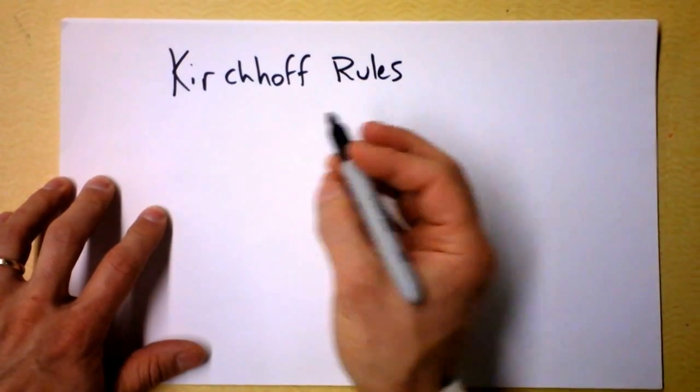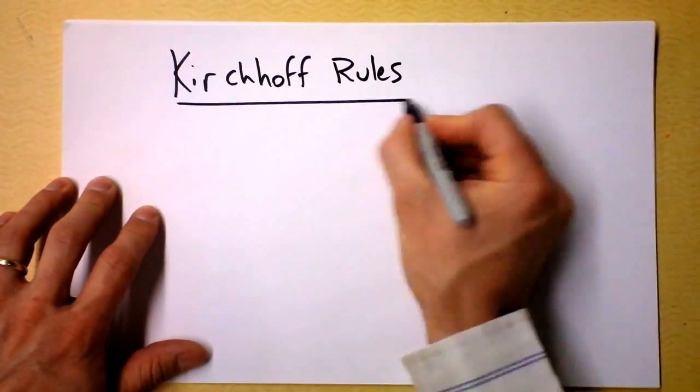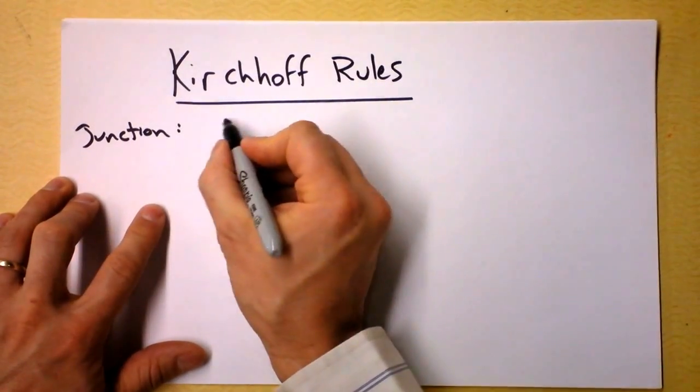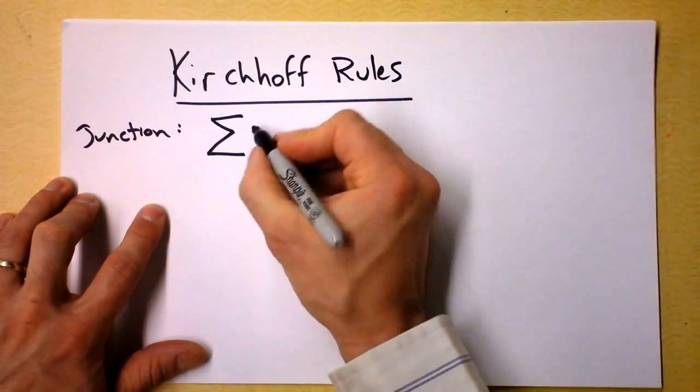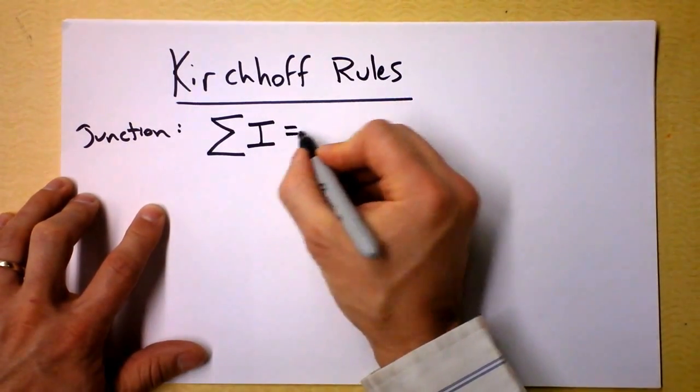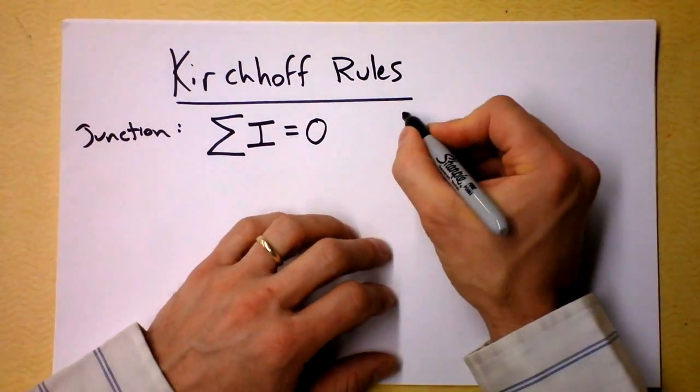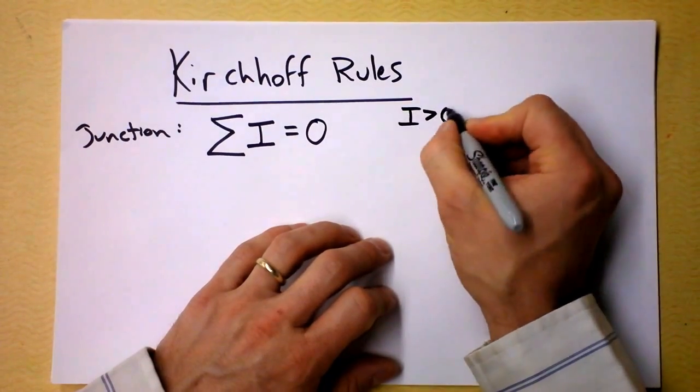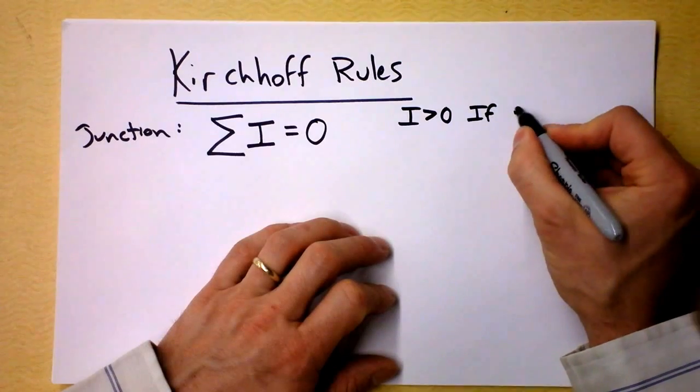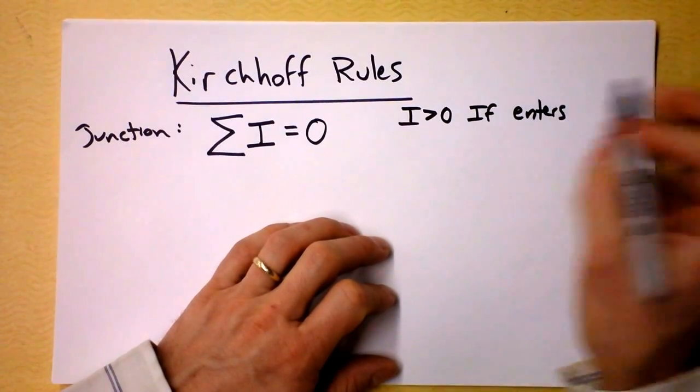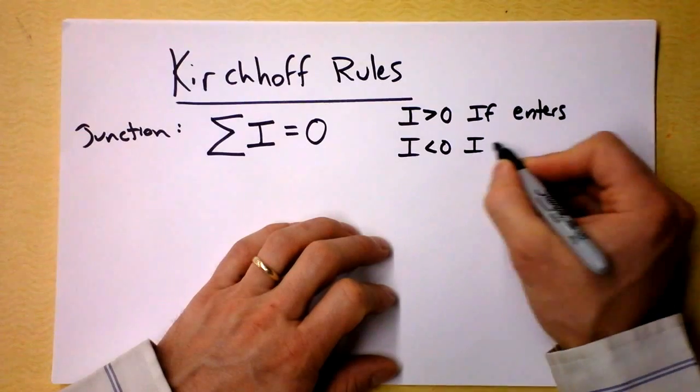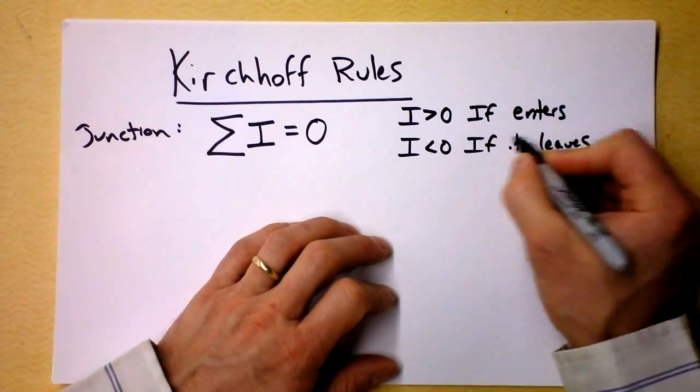Rule number one, called the junction rule, says that for all the currents entering or leaving a particular junction, their sum must be zero. A current is greater than zero if it enters a junction and the current is less than zero if it leaves a junction.